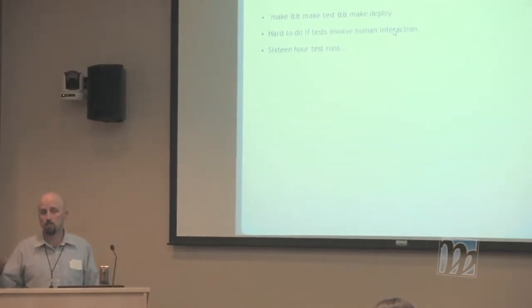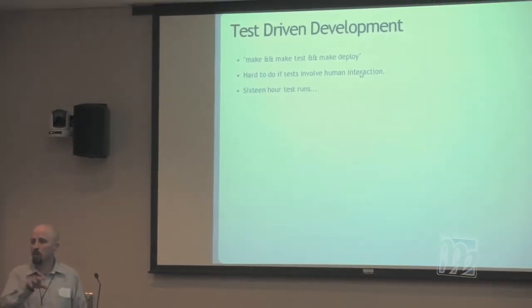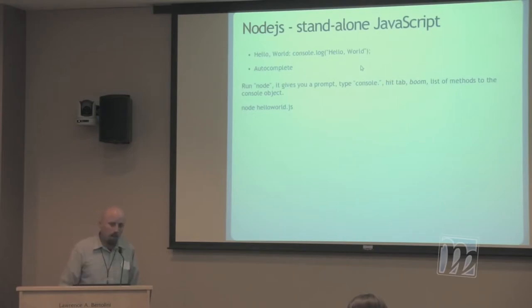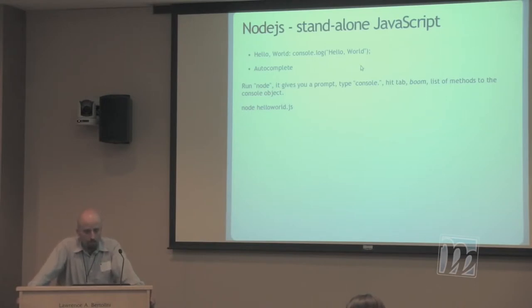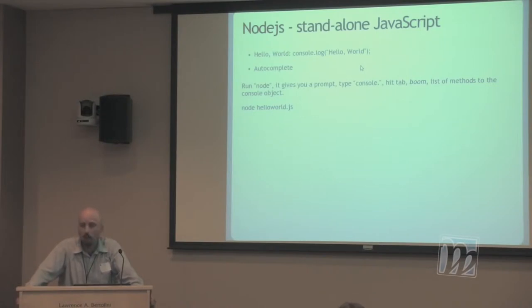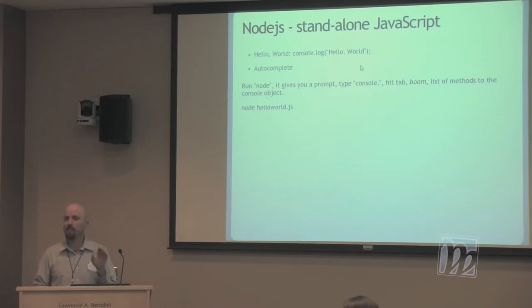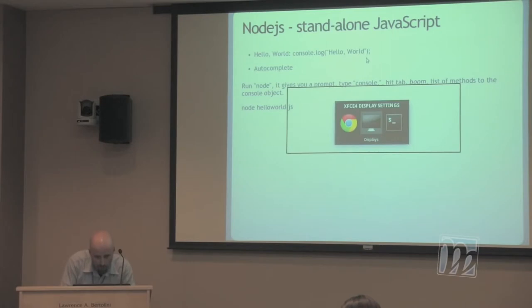Test-driven development: it's really nice to write code that tests what you expect a function to do, and then as you make the function more complex, if that original test breaks you know immediately. That's really hard to do in browser-based apps. Enter Node.js — it's a little standalone command-line interpreter. Hello world is as simple as console.log('hello world'). One of the coolest things for someone like me who hates not having a good runtime environment: you can work with it interactively, start typing an object, hit tab a couple times, and it tells you everything you can do with that object.